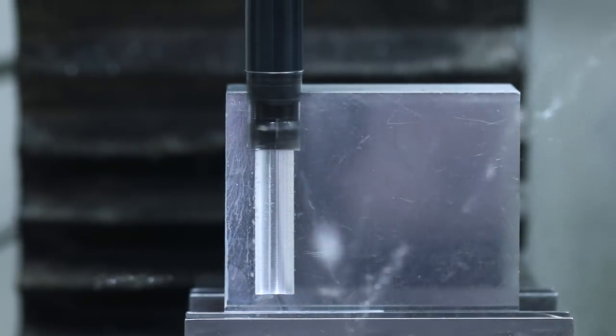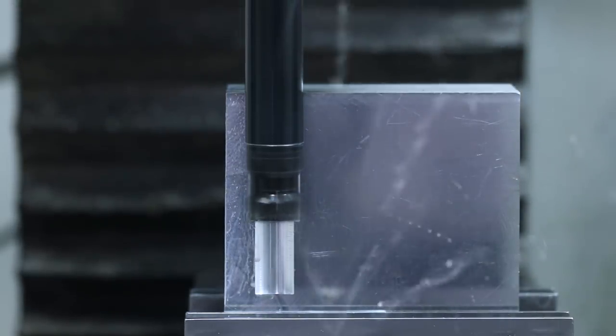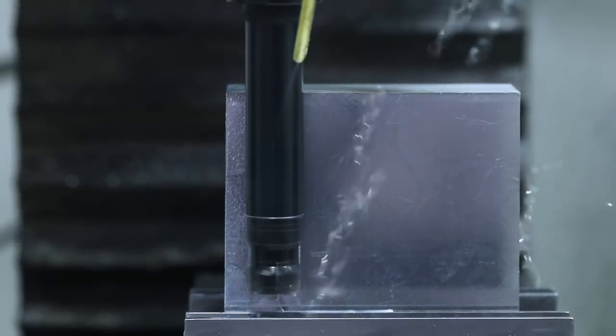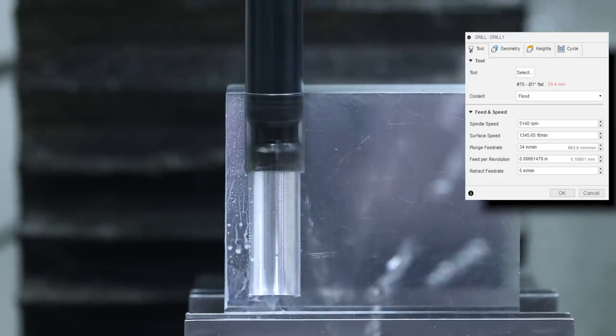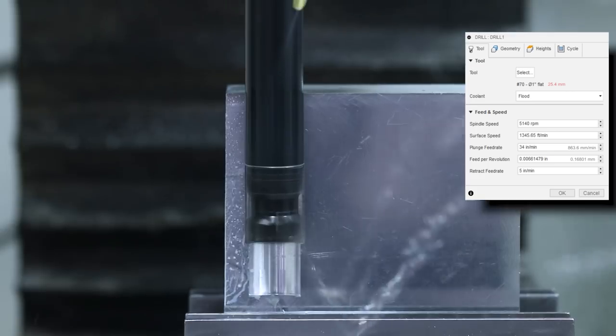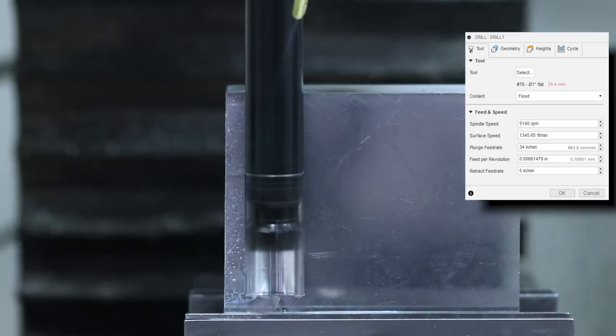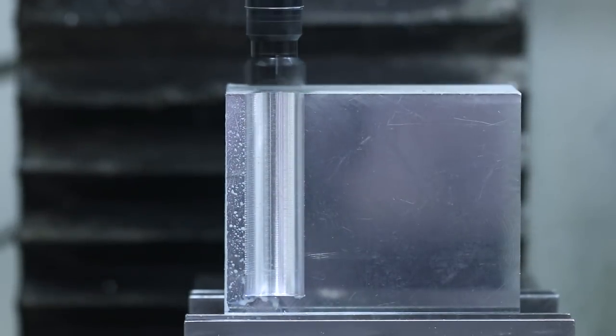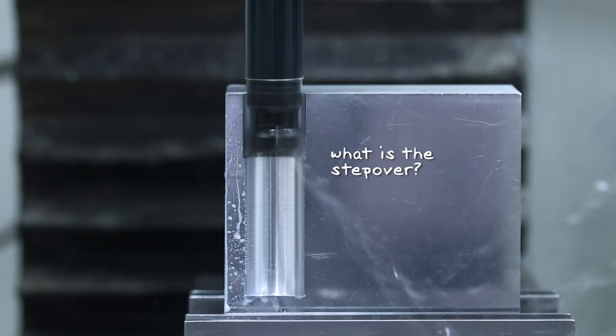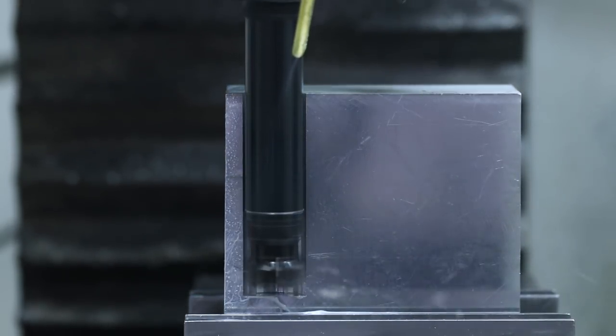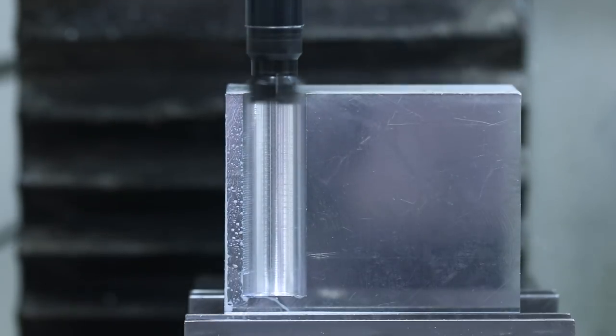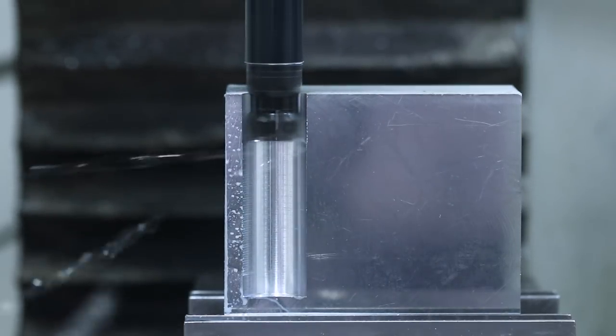Folks, look at that. It sounds great. What's the recipe? We're starting out here, max RPMs on the Tormach 1100 5140, plunging at 34 inches a minute. It's about 6.6 thousandths feed per rev. The key, though, is what is this stepover? And that's driven by the sketch that we're using to create this toolpath. Like I said, this isn't the easiest thing to set up from a CAD and CAM standpoint, but I think it's worth it.